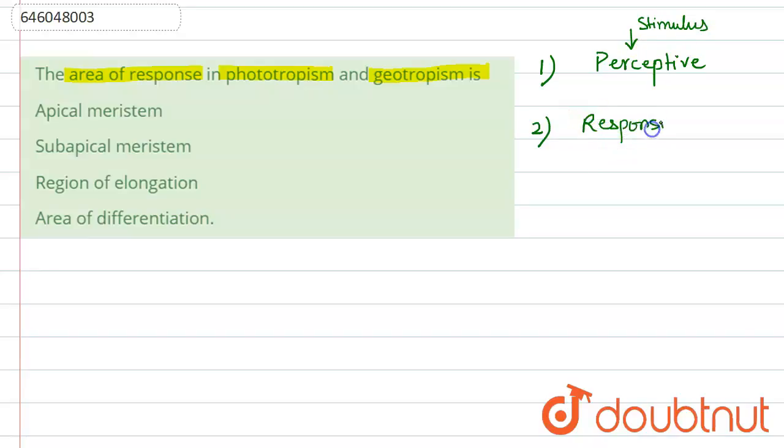for this stimulus. So in the question, the area of response in phototropism and geotropism is. Let's say light is the stimulus, so the tip of a shoot